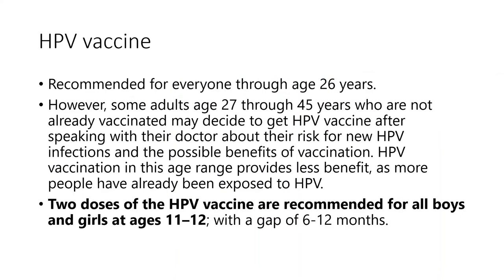HPV vaccine is now available and recommended for everyone. Some adults aged 27 to 45 years who are not already vaccinated may decide to get the HPV vaccine after speaking with their doctor about their risk. HPV vaccination in this age range provides less benefit as more people have already been exposed. Two doses are recommended for all boys and girls at ages 11 to 12 years with a gap of 6 to 12 months.